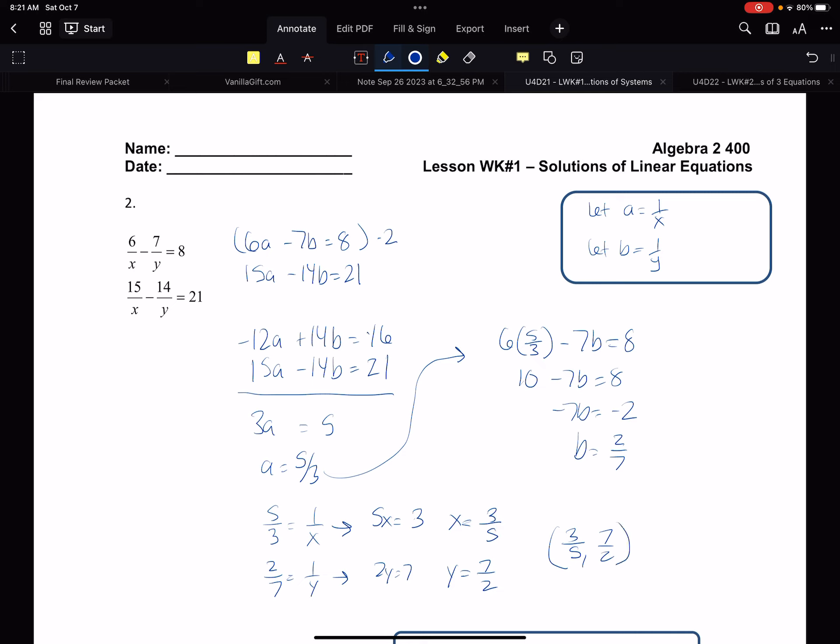What is 5 thirds and 3 fifths? What is 2 over 7 and 7 halves? Reciprocals. So in the end, by using this sub in method, we solve for A, we solve for B, x and y are going to be the reciprocals for that. And that's going to hold true every time.